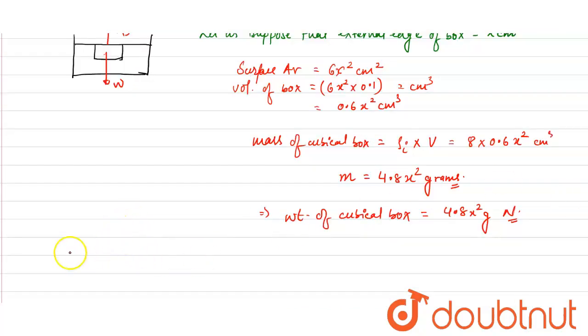The weight of the cubical box will be balanced by the buoyancy force, which is given as density of fluid times g times volume of fluid displaced.